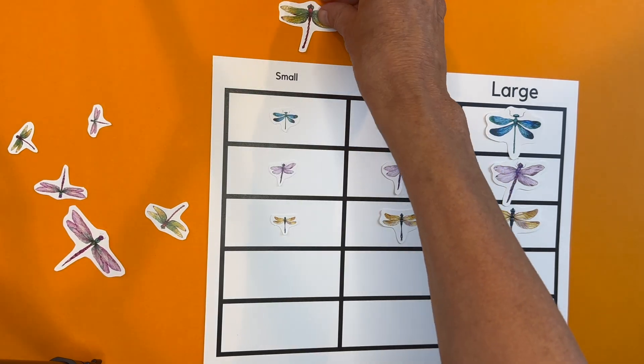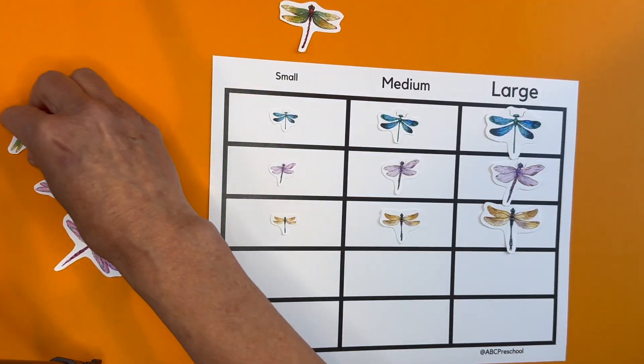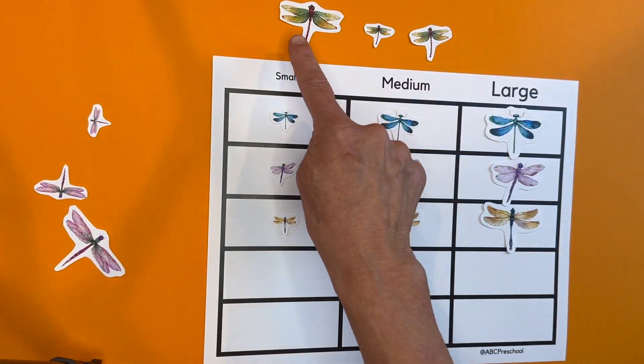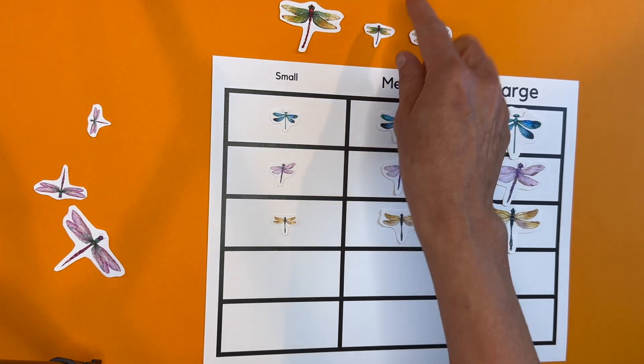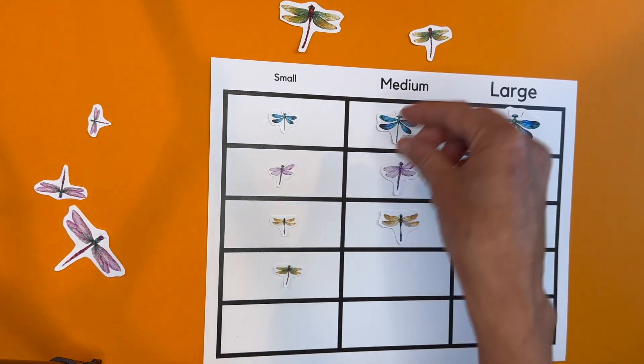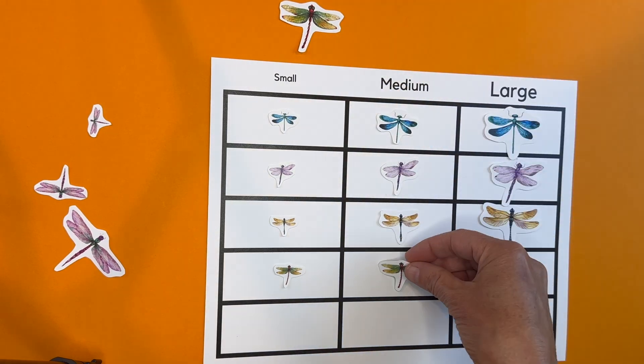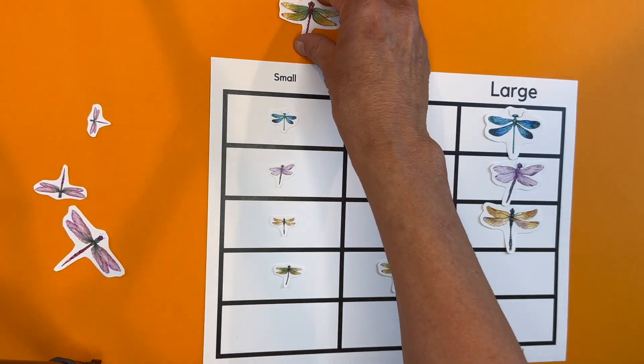Okay, let's do the one with the greenish wings. We'll take right here. Let's start with the small one. Oh, right here. Small, medium one, right here. Medium, and large.